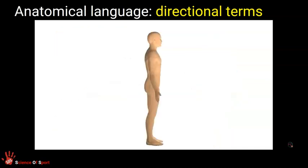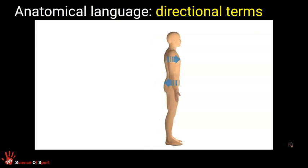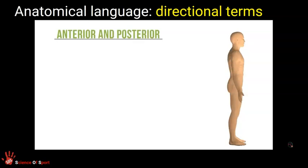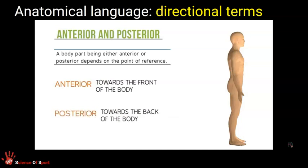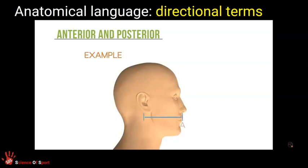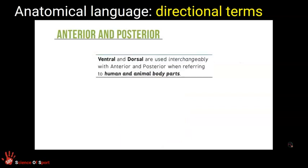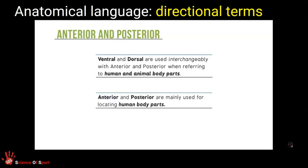When we need to describe the location of a body part as in front of or behind another body part, we use the terms anterior and posterior. Whether a body part is anterior or posterior depends on the point of reference. Anterior is towards the front of the body, while posterior is towards the back of the body. For example, the nose is anterior to the ears, and the ears are posterior to the nose. Note that the terms ventral and dorsal are also used interchangeably with anterior and posterior, though anterior and posterior are mainly used for human body parts.